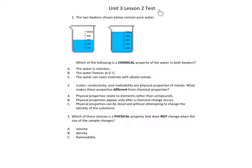Unit 3, Lesson 2 Test, Number 1. The two beakers shown below contain pure water. Which of the following is a chemical property of the water in both beakers? A. The water is colorless. B. The water freezes at 0 degrees Celsius. C. The water can react violently with alkaline metals.